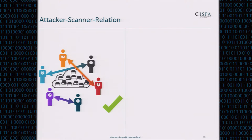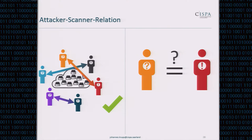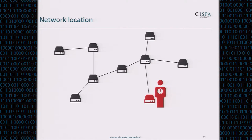We consider the problem of linking scanners to attackers as solved. But is it the best we can do? Initially we said the scanner and the attacker could be the same person. To find out whether this is the case, we need some additional feature — specifically, why not use the network location of the attacker?